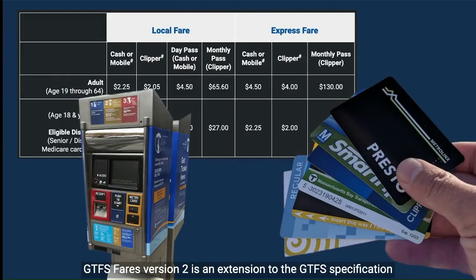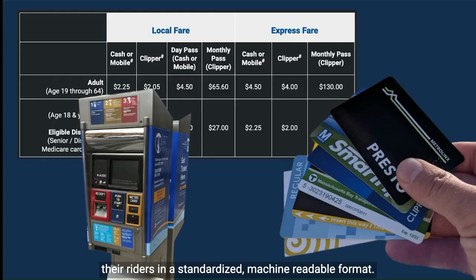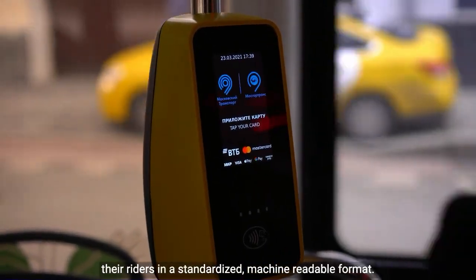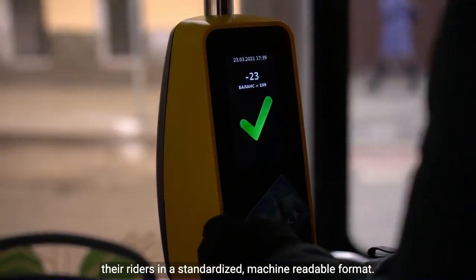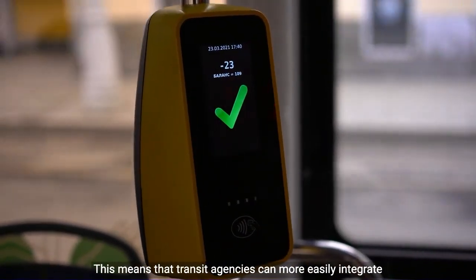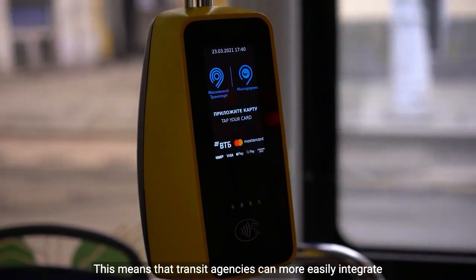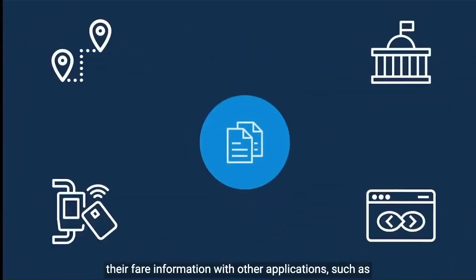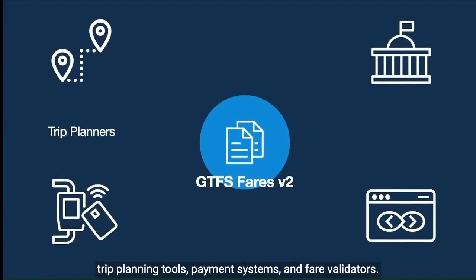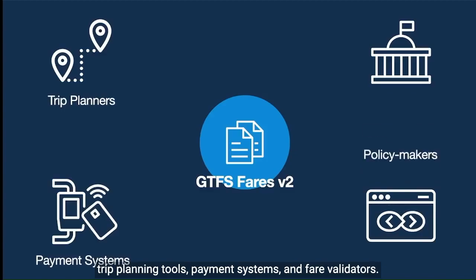GTFS fares version 2 is an extension to the GTFS specification that allows agencies to communicate fare information with their riders in a standardized, machine-readable format. This means that transit agencies can more easily integrate their fare information with other applications, such as trip planning tools, payment systems, and fare validators.